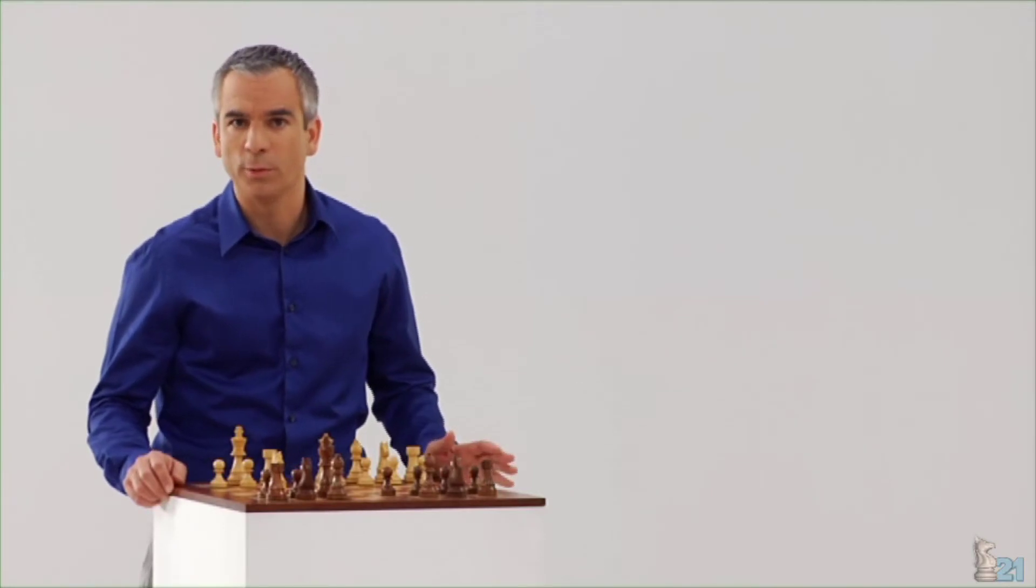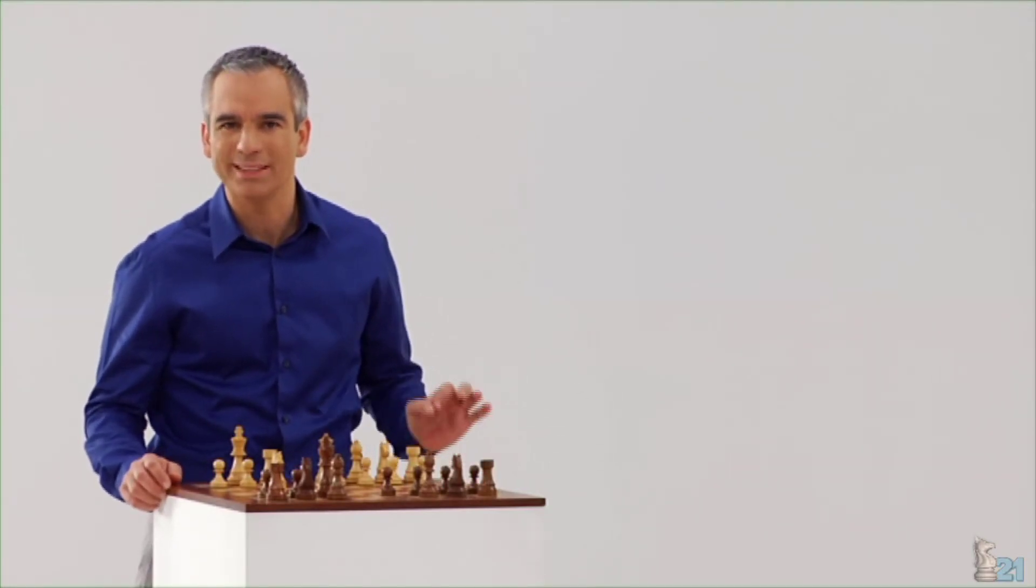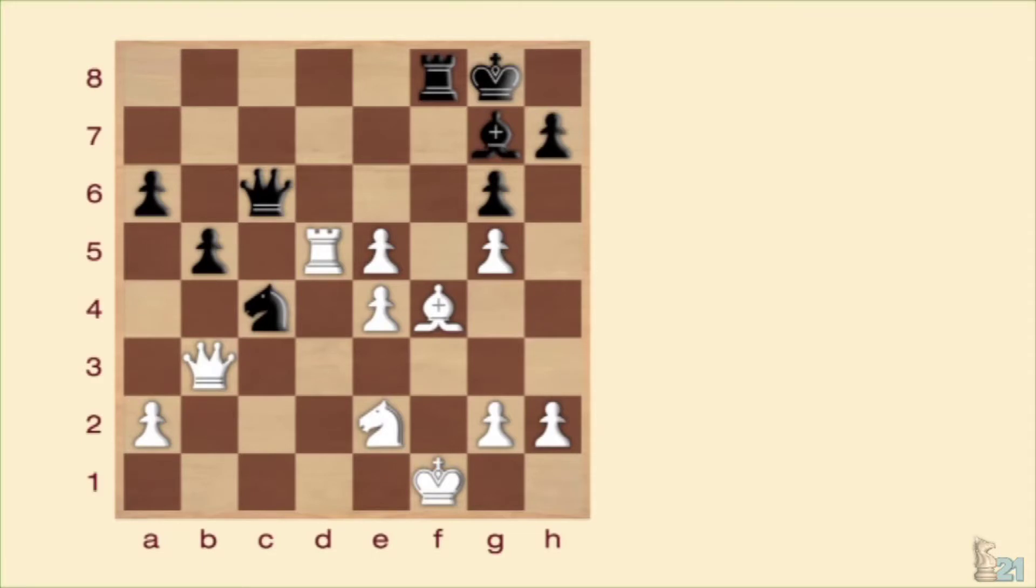Como estamos comprobando, el jaque doble es un arma tremendamente poderosa. Vamos ahora a una partida de élite entre el húngaro Lajos Portis y el ruso Víctor Kornoy. Aquí, el jugador negro observa la posibilidad de dar un jaque doble a rey y dama. El problema es que la casilla D2 está controlada por un alfil y una torre.